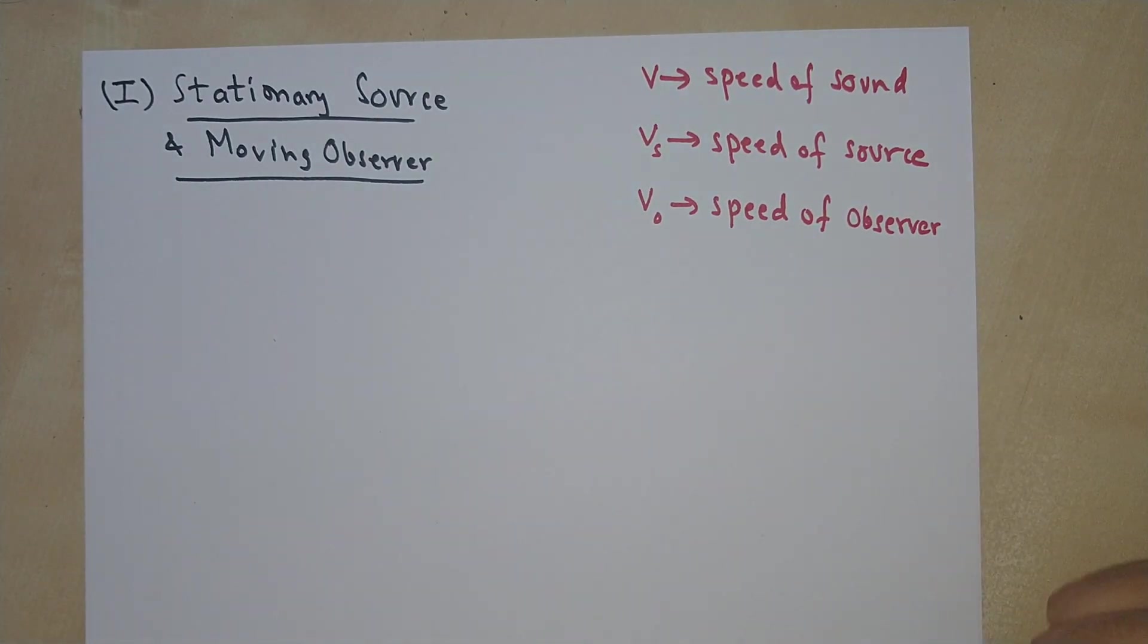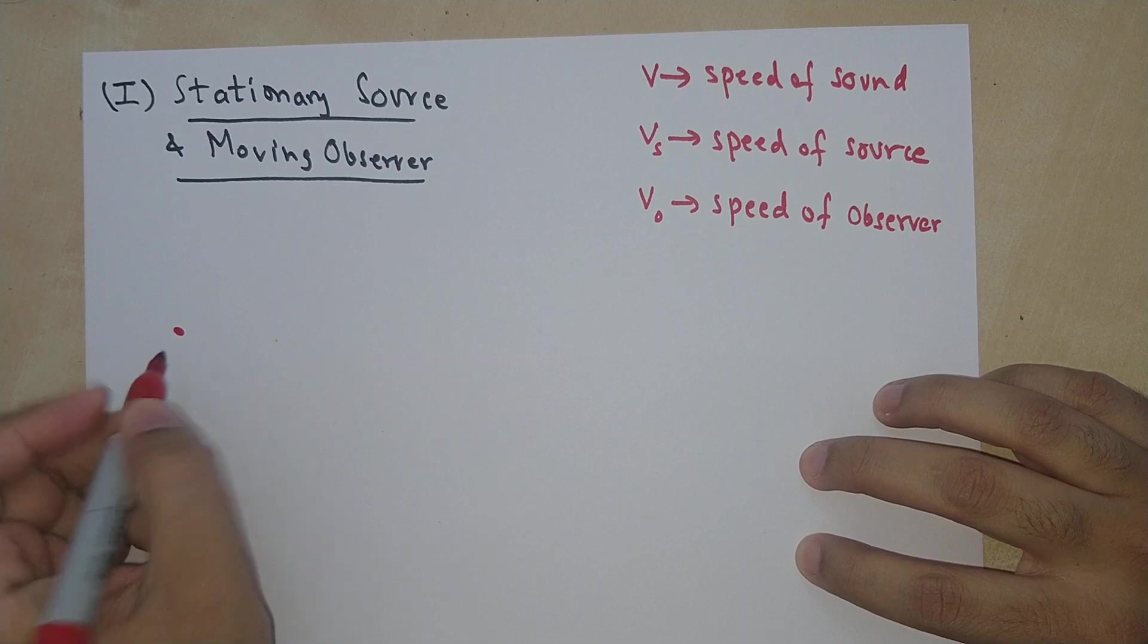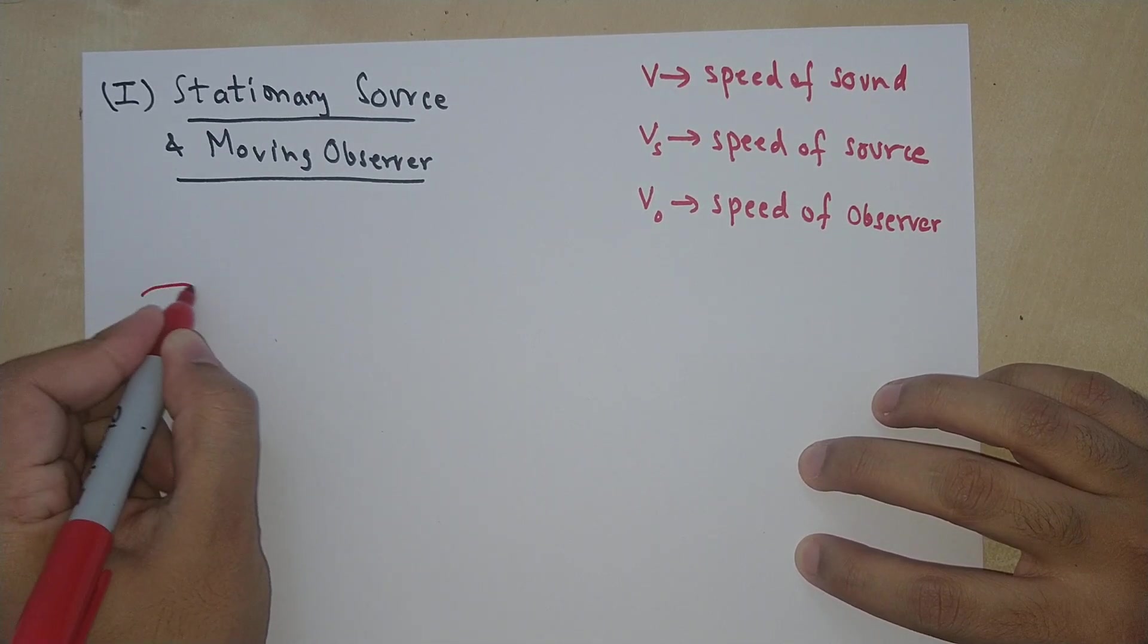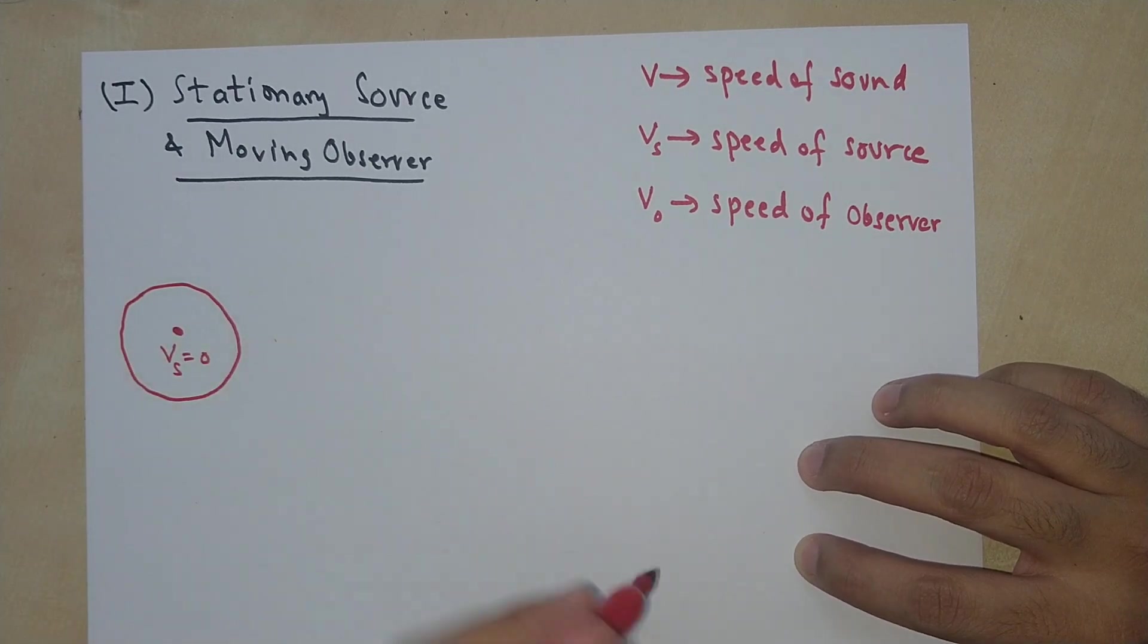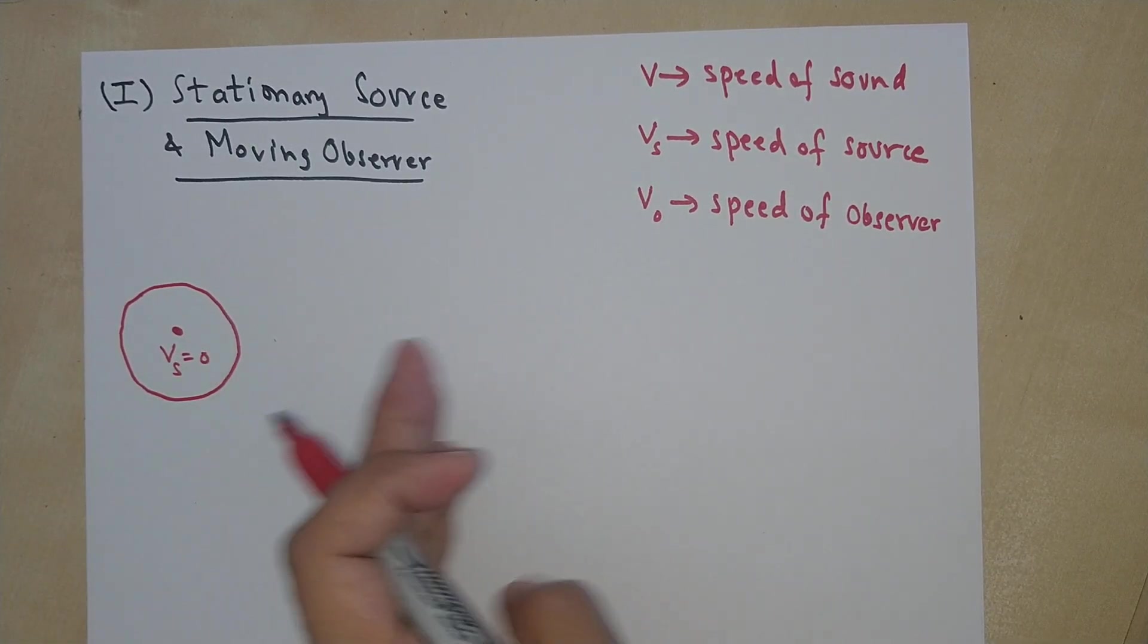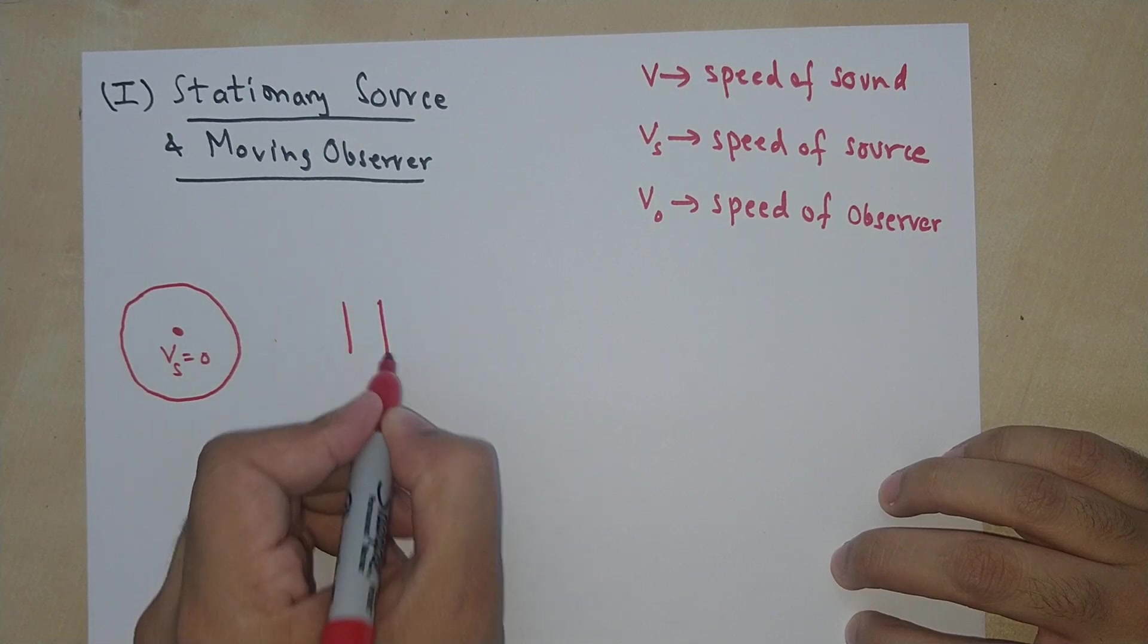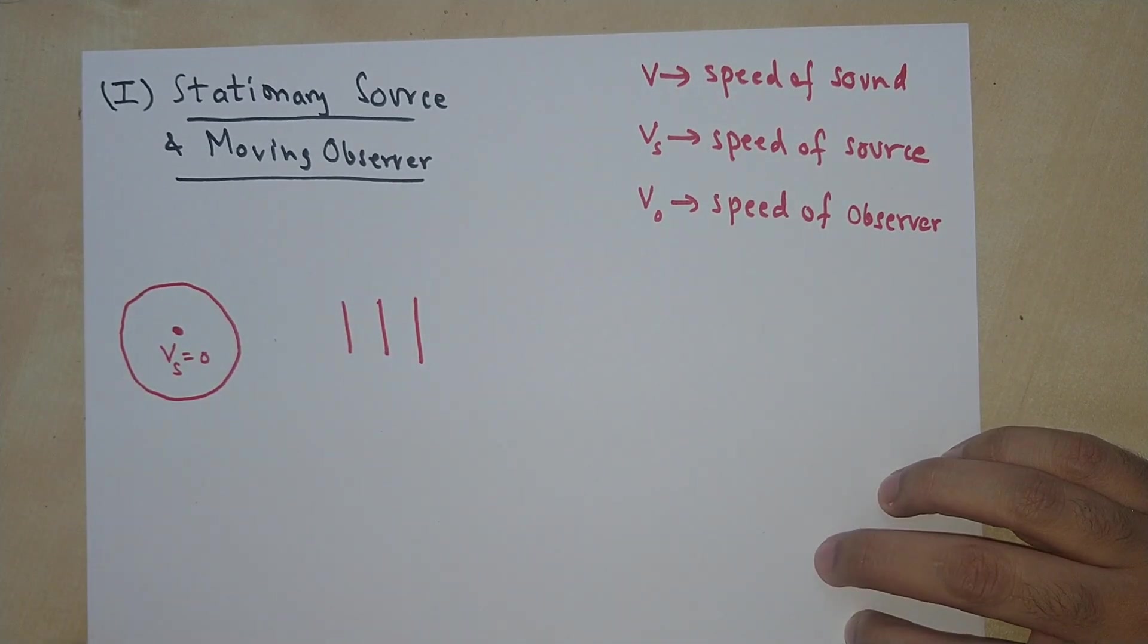Now, the source is not moving in this case. So let's say this is the source. The source is not moving, so V sub s is zero. This is the source of sound, so it's emitting sound waves. I'm going to represent these sound waves far away from the source as straight lines. So far away from the source, they're essentially parallel to each other.